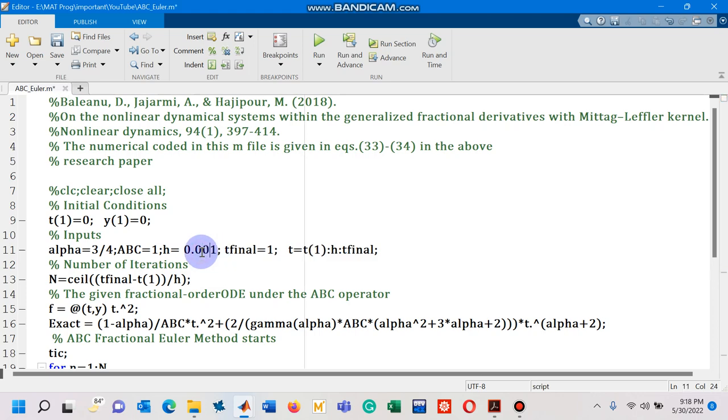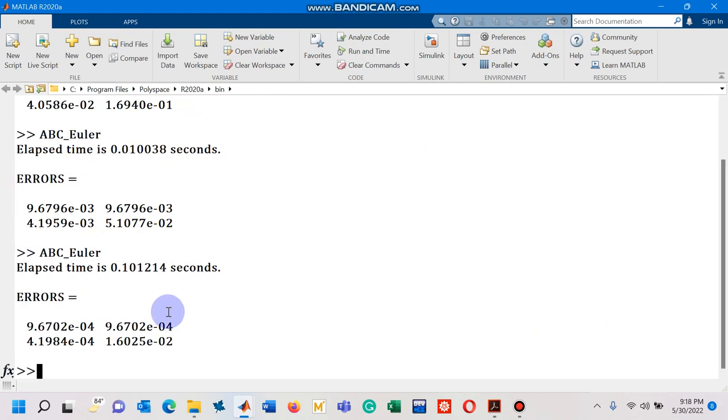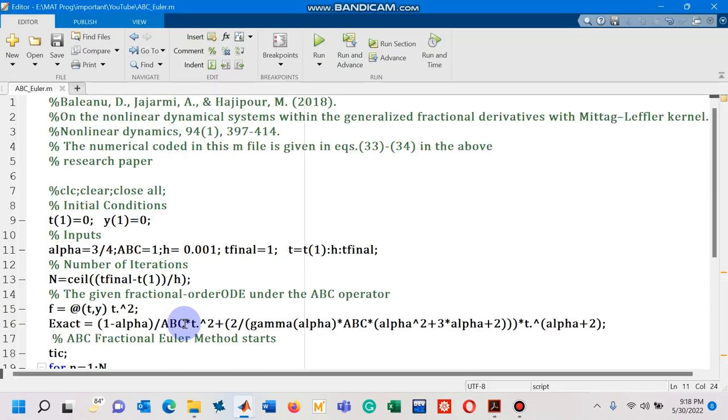So, let's decrease the step size further by one more order of magnitude and then run the script file again. And you can see we have one order of magnitude decreased in the errors. Once again, let's decrease it further,